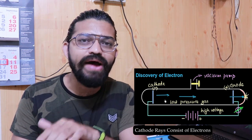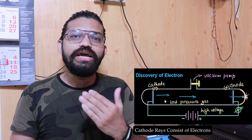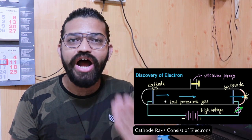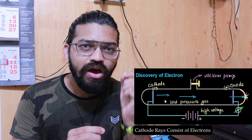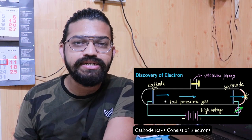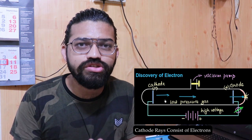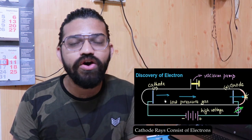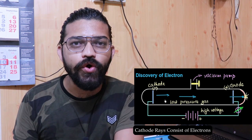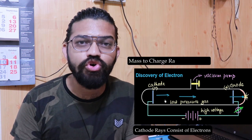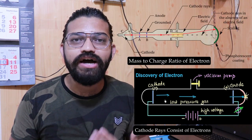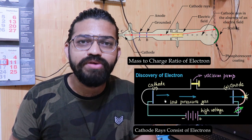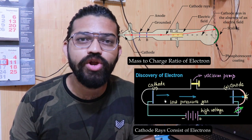These cathode rays consist of small subatomic particles — the electrons. In a later experiment, he found out the mass-to-charge ratio of this particular electron. That was another experiment conducted by J.J. Thomson. The mass-to-charge ratio of the electrons was found to be much, much smaller than any other known atom at that particular time.